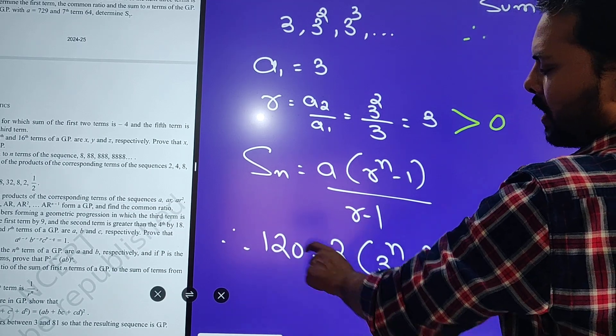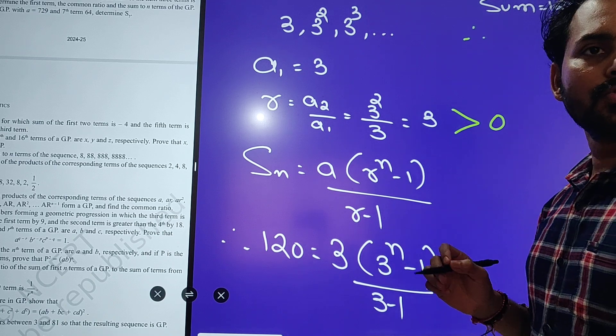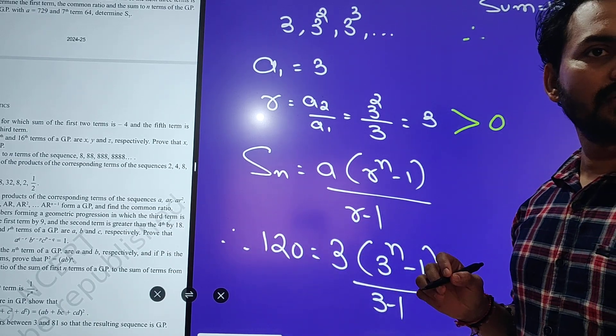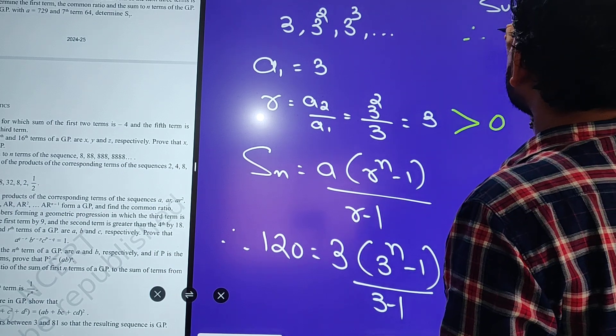Yeh 2 ho jayega. 2 yaha multiply ho ga, toh kitna ho jayega? 240. 240 aur yeh divide by 3 ho jayega, toh kitna ho jayega? 80. Okay. So,